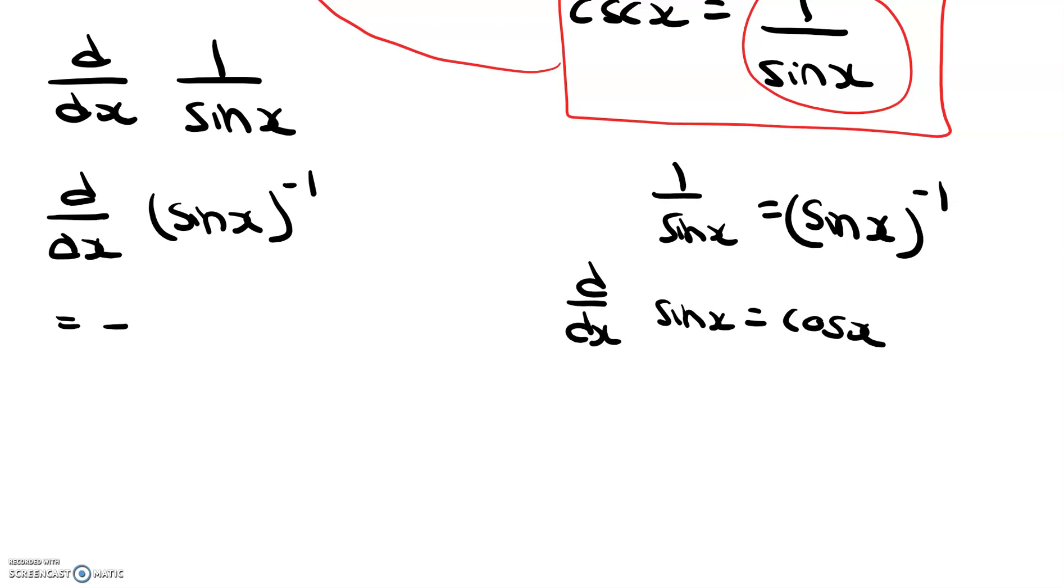Alright, that gives us negative 1 times sine x to the negative 2 times cosine x. Alright. So, if we were to rewrite this, we could rewrite this as negative cosine x over sine squared x.